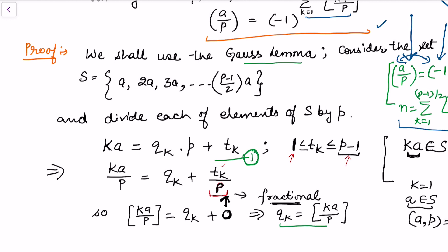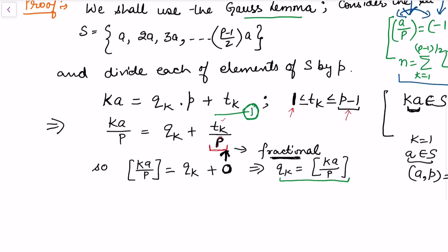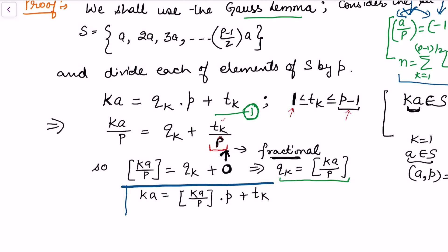This gives us qk = floor(ka/p), and substituting back into equation 1 we get ka = floor(ka/p) · p + tk. This is the value of the elements appearing in S, since S consists of multiples of a.